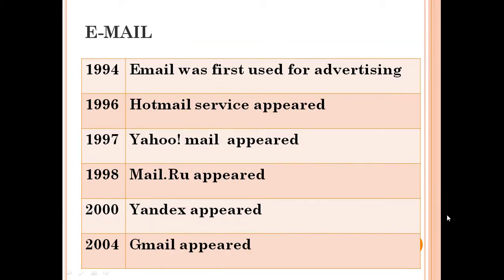In 1994, email was first used for advertising. In 1993, host mail service appeared. In 1997, Yahoo Mail appeared. In 1998, Mail.ru appeared. In 2000, Yandex appeared. In 2004, Gmail appeared.